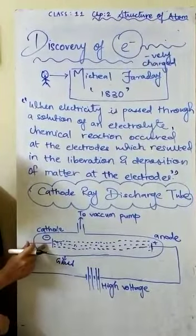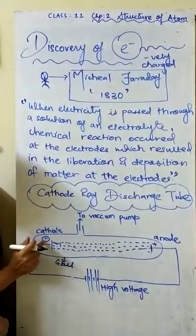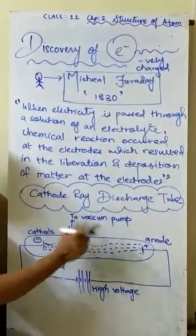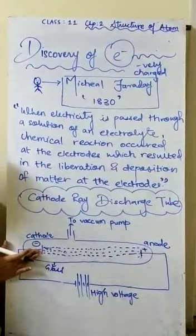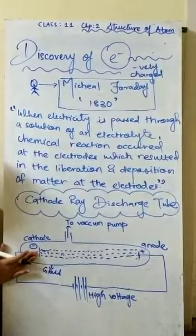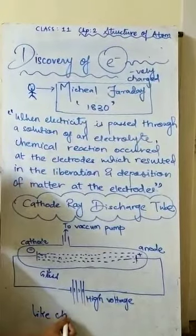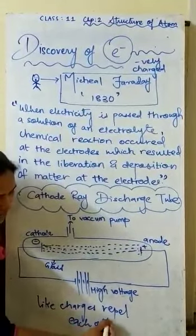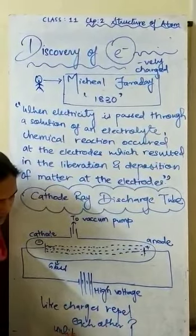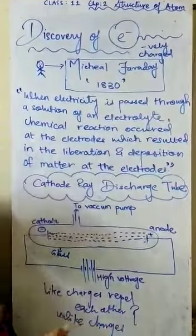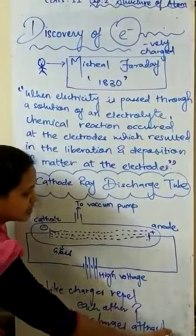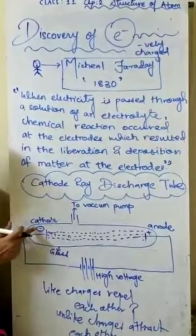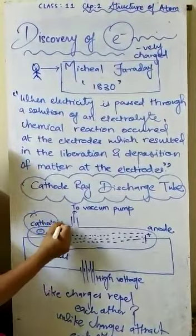This stream of particles is generated from the negative part, that is the cathode, and moves towards the anode. An important principle at work here — which you have studied since class 8 — is that like charges repel each other and unlike charges attract each other. Since it was generated from the negative cathode, it came to be known as cathode rays.